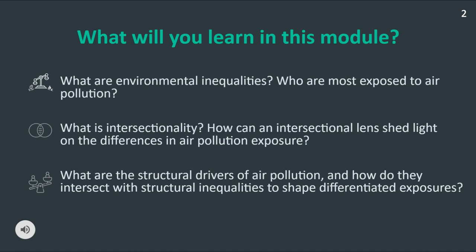To explore this, the module will begin by introducing the parallels between socioeconomic marginalization and higher levels of exposure to air pollution. It explains how those who are socioeconomically marginalized are disproportionately exposed to air pollution. Then, the module will zoom into how gender and socioeconomic identities shape exposure. It will introduce the concept of intersectionality and explain how an intersectional lens can help us understand differences in air pollution exposure.